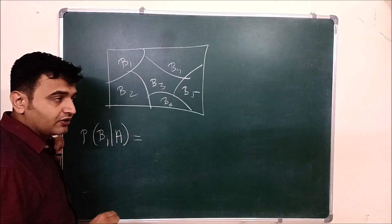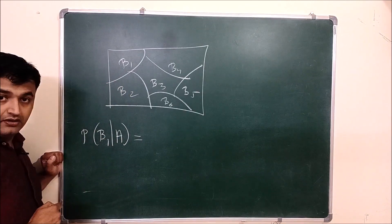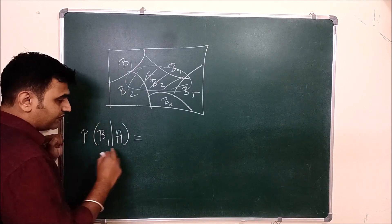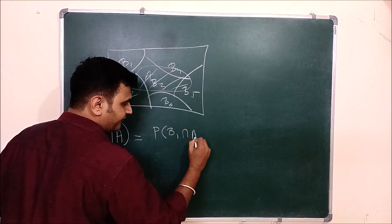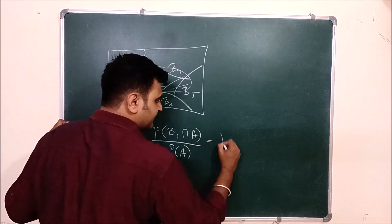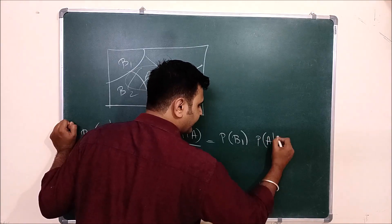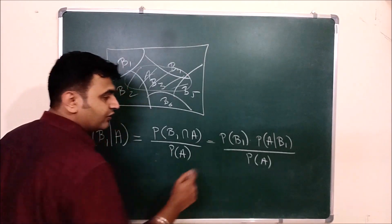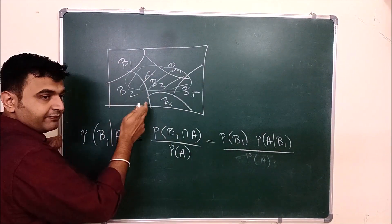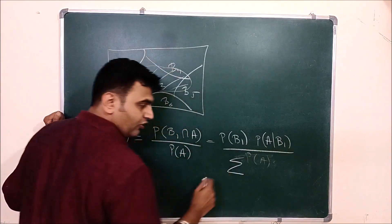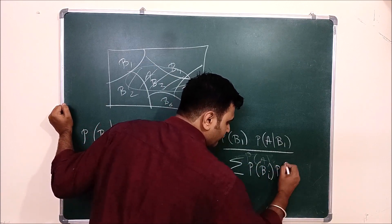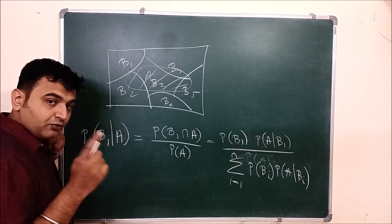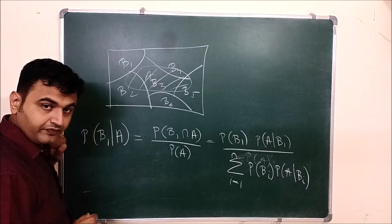In the general case, suppose we have five partitions or in general n partitions. If I ask what is P(B1|A), by Bayes' theorem and the definition of conditional probability, it is P(B1 ∩ A) / P(A), which equals P(B1)·P(A|B1) divided by P(A). By total probability, P(A) = sum of P(Bi)·P(A|Bi) for i running from 1 to n.